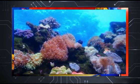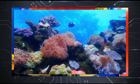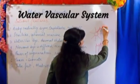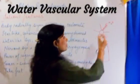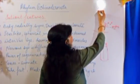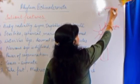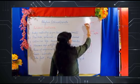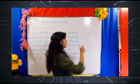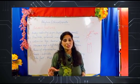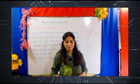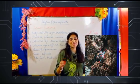Now, the water vascular system: from the central ring, canals branch out and these canals are filled with water — water-filled canals. These lead to the podia, which is the tube foot for locomotion. The podia has a head-like structure called the ampulla. This structure helps the animal move and is also fitted with a sucker mechanism, which helps the animal attach itself to its host or prey.